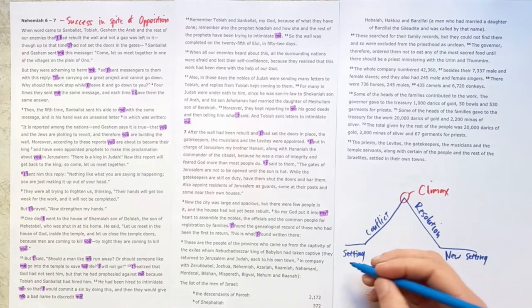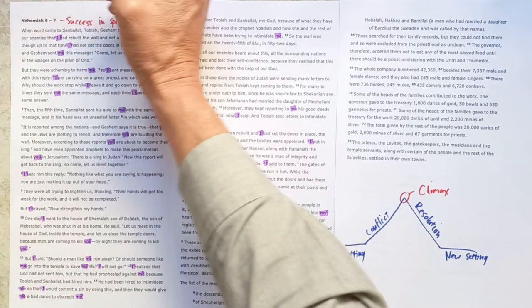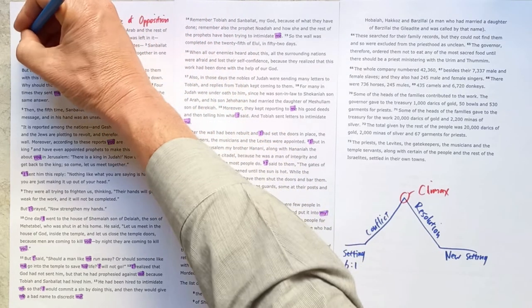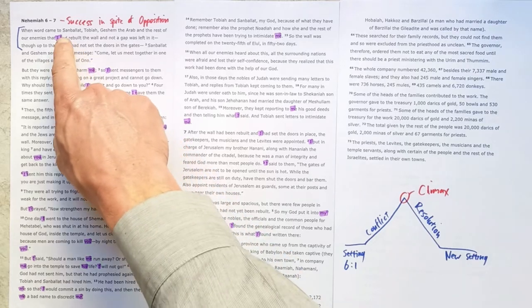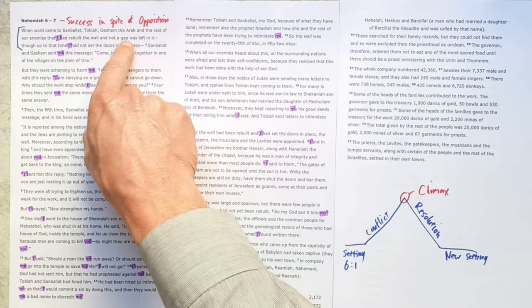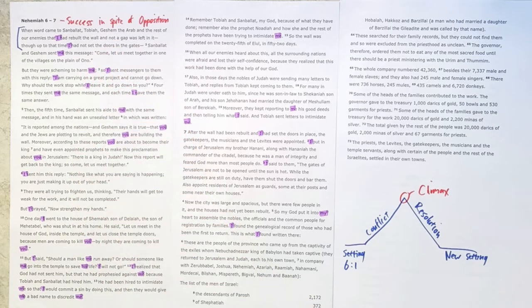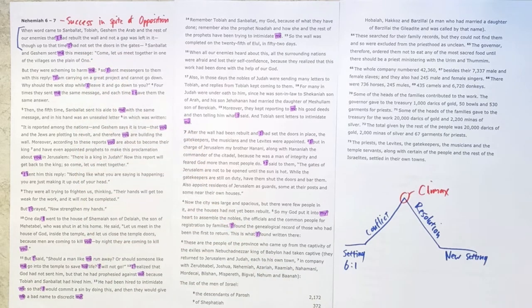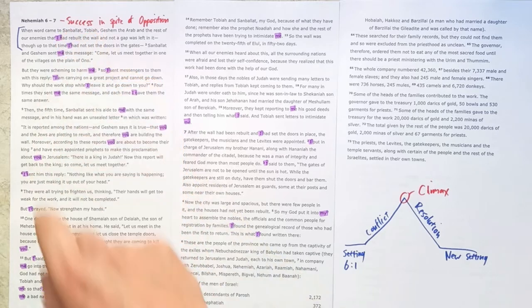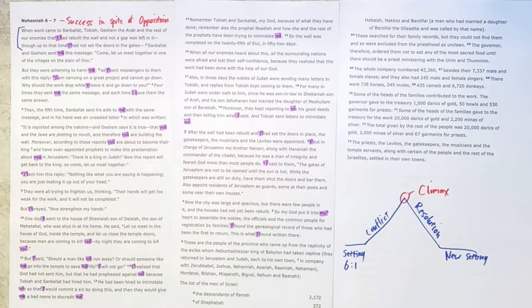The setting is given here in chapter 6 verse 1. So just up front here where we see the old enemy returns with an eye fixed on Nehemiah himself, because there's not a gap left in the wall. So the moment to attack is closing very quickly, because all they need to do is put the doors in the gates now. And so the setting is given with the old enemy coming after Nehemiah himself.